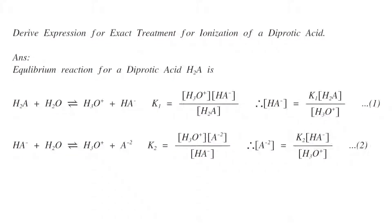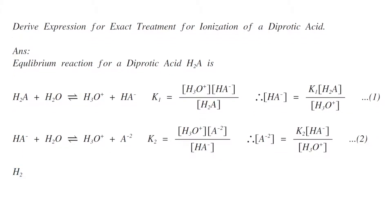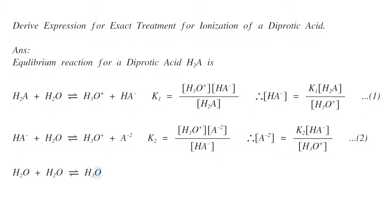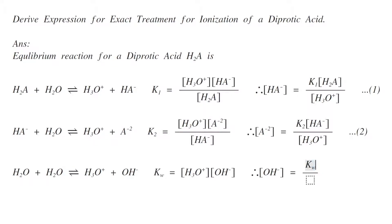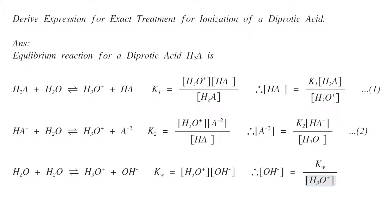From the third reaction, the ionization product Kw equals [H3O⁺][OH⁻]. Therefore, [OH⁻] equals Kw divided by [H3O⁺]. This is equation number three.